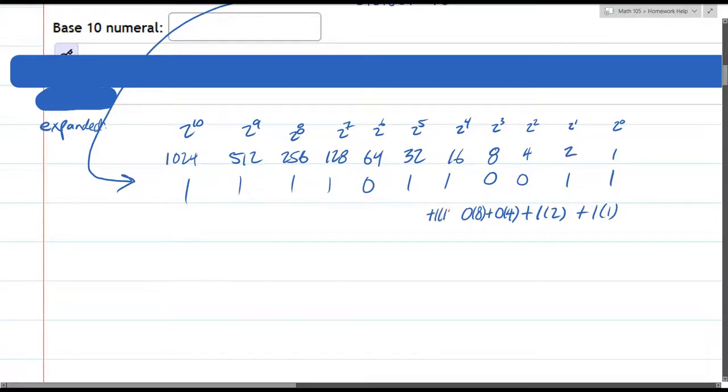So I have 1, 16. Trying to write small so I can fit them below. It's going to get more difficult. 1, 32, and 0, 64s, 1, 128, 1, 256, 1, 512, and 1, 1024.